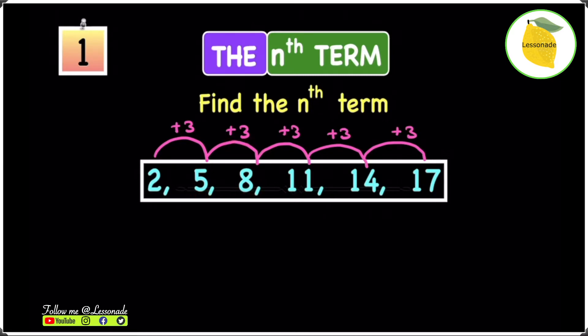Because the sequence is increasing by 3 each time, we're going to write the 3 times table underneath this sequence, because it also increases by 3 each time: 3, 6, 9, 12, 15, and 18.